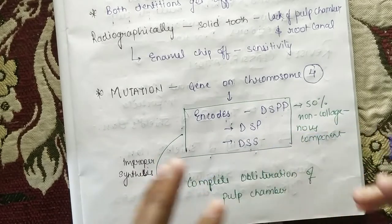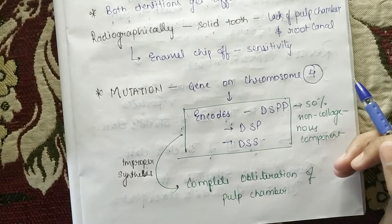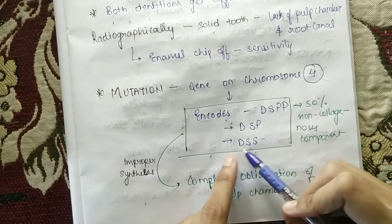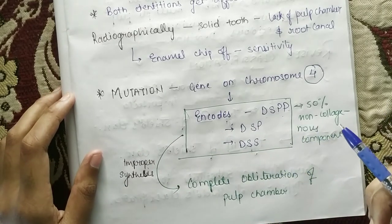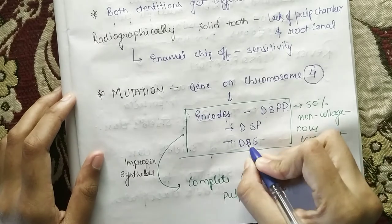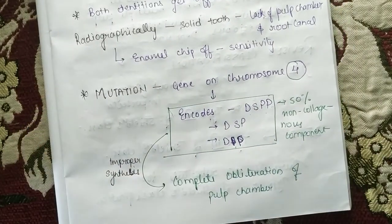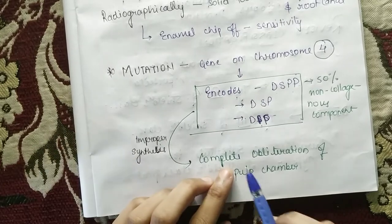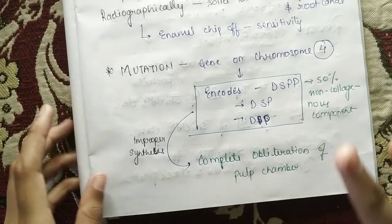DSPP is the major cause for dentinogenesis imperfecta and it has two components: Dentine Sialo-Protein (DSP) and Dentine Phospho-Protein (DPP). It is a 50% non-collagenous component, and if there is improper synthesis, that will cause complete obliteration of the pulp chamber. This is all about the introduction of dentinogenesis imperfecta; now coming to its classification.